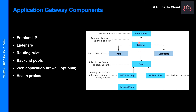The next component is Listeners. A listener accepts traffic arriving on a specified combination of protocol, port, host, and IP address. Each listener routes requests to a backend pool of servers following a routing rule that you specify. A listener can be basic or multi-site. A basic listener only routes a request based on the path of the URL, while a multi-site listener can also route requests using the hostname element of the URL. Listeners can also handle SSL certificates for securing your application between the user and the Application Gateway.